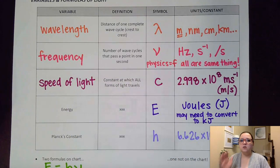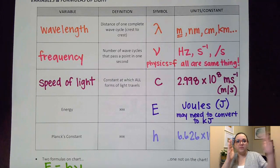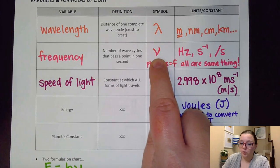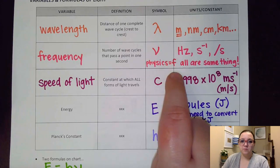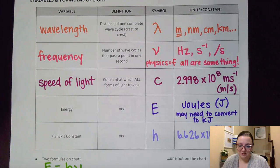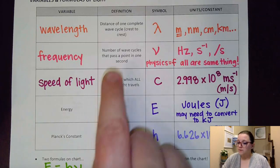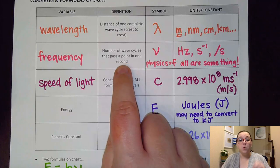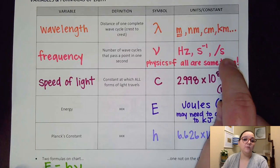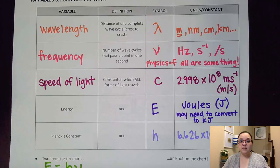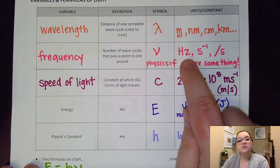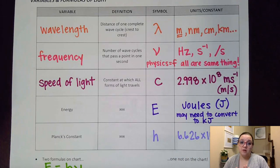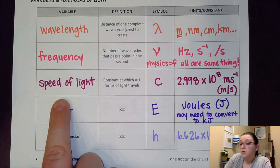Frequency is the number of wave cycles that pass a point in one second. In chemistry, we use the Greek nu symbol; in physics they often use F — they mean exactly the same thing. The units for frequency are per second, or equivalently seconds to the negative first, or hertz. All of those can be used interchangeably — they all mean exactly the same thing.